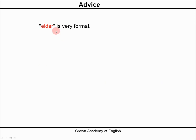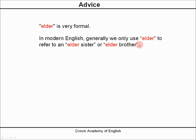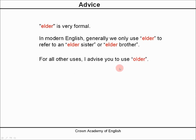Elder — be careful, it is very formal. And in modern English, generally we only use elder to refer to an elder sister or an elder brother — these are the common uses in modern English. Therefore, for all other uses, I advise you to use older. If you want to describe the age of a sister or brother, use elder, but for all other uses, use the word older.